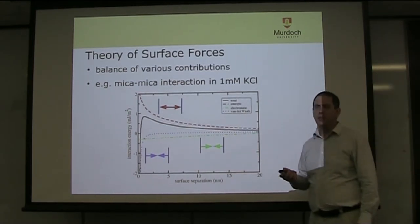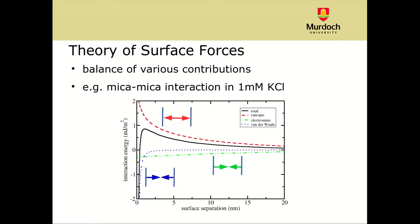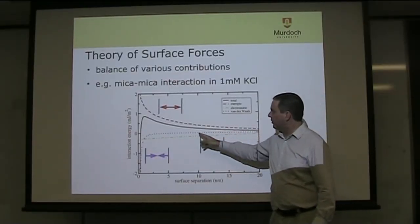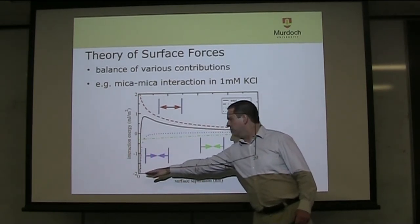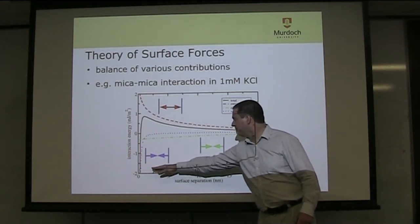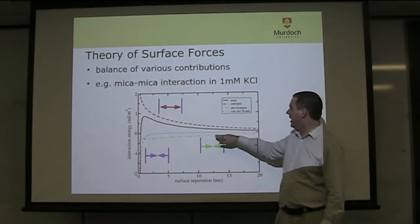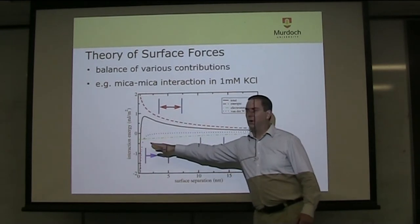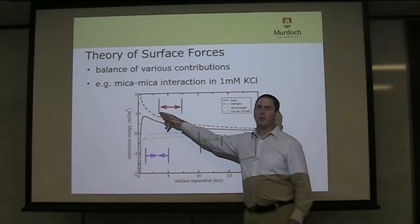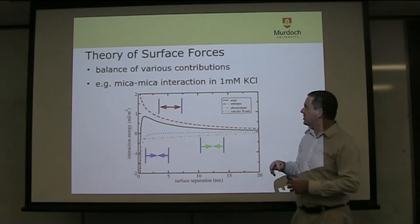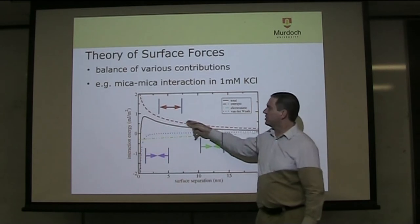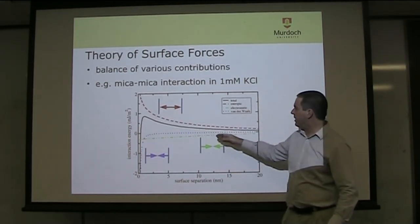We can quantify that using DLVO theory or its more modern variants — there's a bit of physics and mathematics that enables us to calculate the various contributions. Here we have an illustration of the interaction between two microparticles in one millimolar potassium chloride solution. The van der Waals force is quite strongly attractive, but only at very close distances. The direct electrostatic interaction due to charges is mildly attractive, not as strong. The red curve represents the repulsive effect from the entropy of the adsorption layers as we bring them into contact — that's quite strongly repulsive. Combining those three factors gives the total force shown in black.